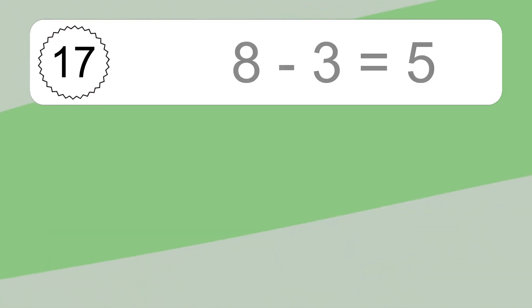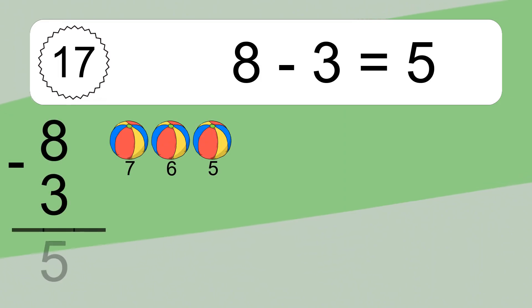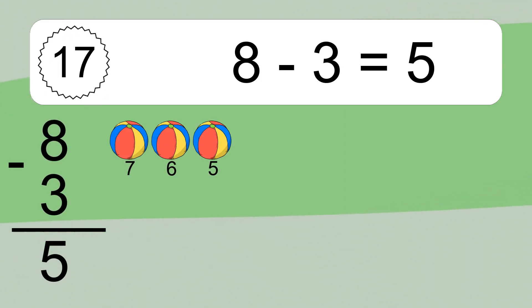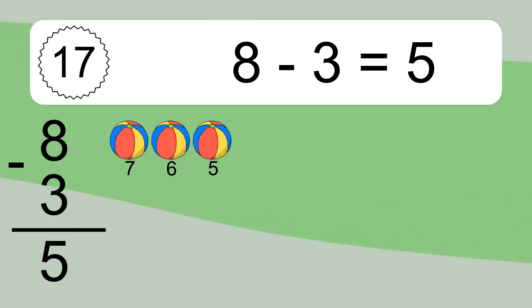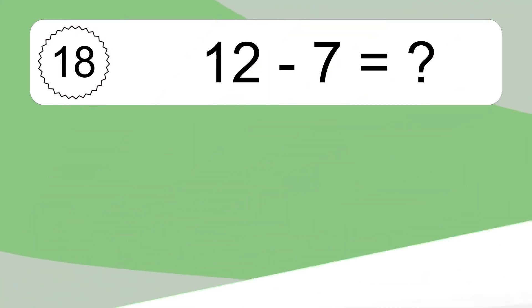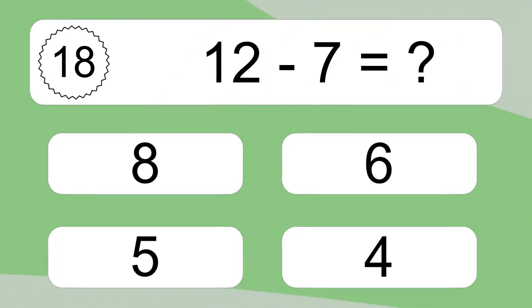8 minus 3 equals what? 8 minus 3 equals 5. Let's count it: 7, 6, 5.